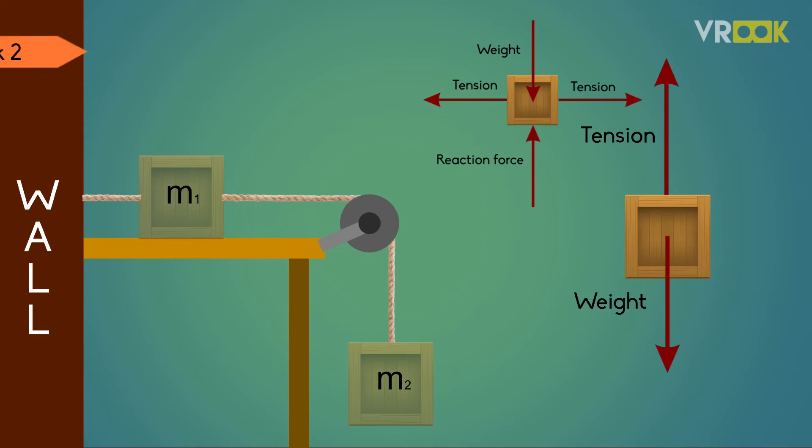As the string is attached to the block there will be tension in the string acting upwards and away from the block. So we have the FBD of block 2 like this.